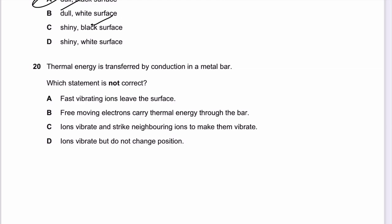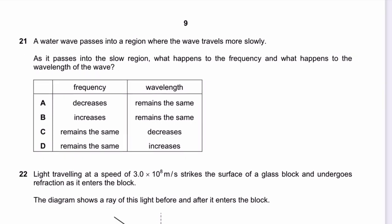Question 20: Thermal energy is transferred by conduction in a metal bar. Which statement is NOT correct? Option A — 'fast vibrating ions leave the surface' — is incorrect; only electrons move freely through the metal, not ions. Options B, C, and D are all correct descriptions of conduction: free electrons carry energy, ions vibrate and strike neighbors, and ions vibrate but do not change position.